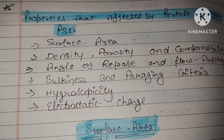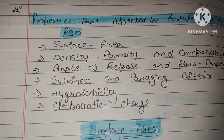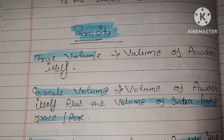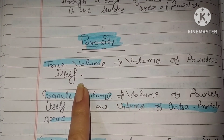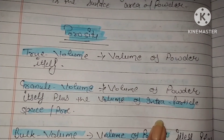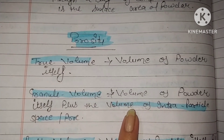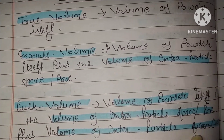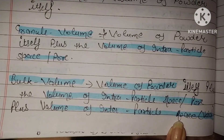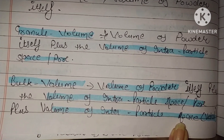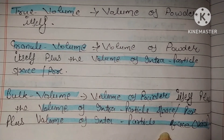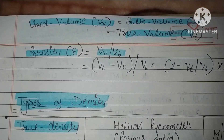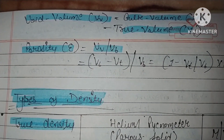Now we'll talk about porosity. The true volume is the volume of the powder itself. Granule volume is the volume of the powder itself plus the volume of intra-particle space and pores. Bulk volume is the volume of powder plus intra-particle space and pores plus inter-particle space (void space). So void volume equals bulk volume minus true volume.